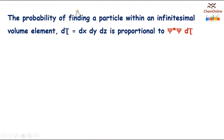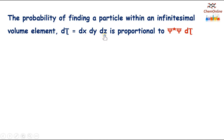The probability of finding a particle within an infinitesimal volume element dτ = dx dy dz, where x, y and z are the coordinates, is proportional to ψ*. So dx dy dz represents the volume element.